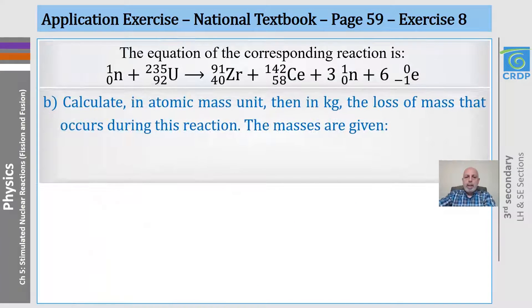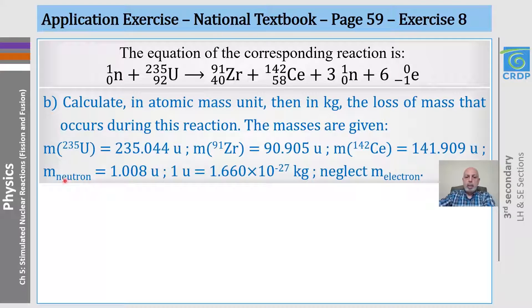Now, the second question is, calculate in atomic mass unit, then in kilogram, the loss of mass that occurs during this reaction. The masses are given, including the mass of the neutron, and neglecting the mass of the electron.